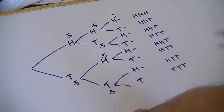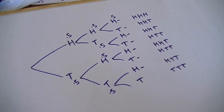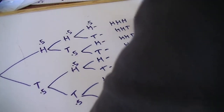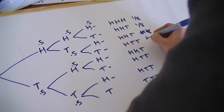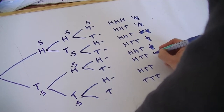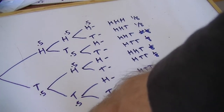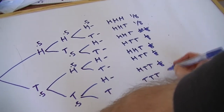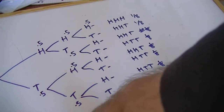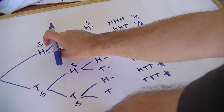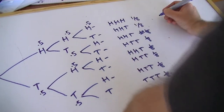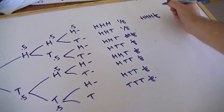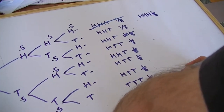Each outcome has a one-in-eight chance of happening. That makes sense because it's one-in-two times one-in-two times one-in-two, which gives one-over-eight. HHH has a one-in-eight chance of happening, and TTT also has a one-in-eight chance of happening.